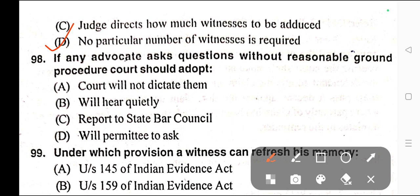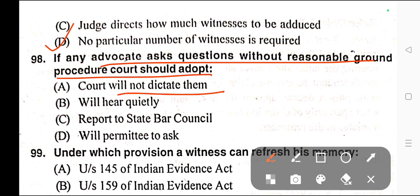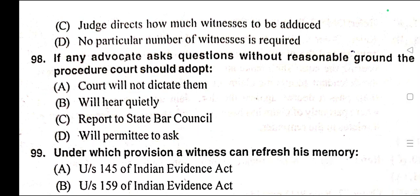Question number ninety-eight: If any advocate asks questions without reasonable ground, which procedure shall the court adopt? Options: A) Court will not dictate them, B) Question will be heard quietly, C) Report the State Bar Council, D) Will permit to ask. Correct answer is option A — court will not dictate them.